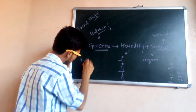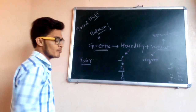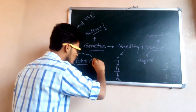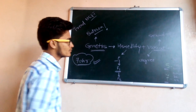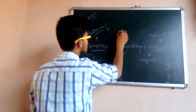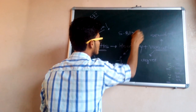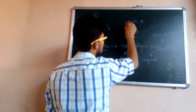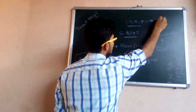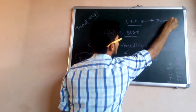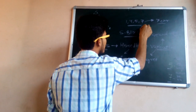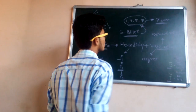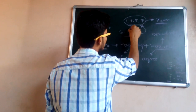Mendel chose seven characters to do experiments on Pisum sativum, but there are many more characters on the plant — the number he chose was seven. S. Blix is an important scientist who identified that the seven characters of Pisum sativum are present on four chromosomes — chromosomes 1, 4, 5, and 7. This is the contribution of S. Blix to genetics.